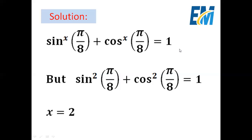We know that for any angle alpha, sine squared alpha plus cosine squared alpha equals 1. Setting alpha equals pi over 8, we get sine squared of pi over 8 plus cosine squared of pi over 8 equals 1. Comparing this with our last equation, we get x equals 2. Therefore, we know one solution that will work, which is x equals 2.